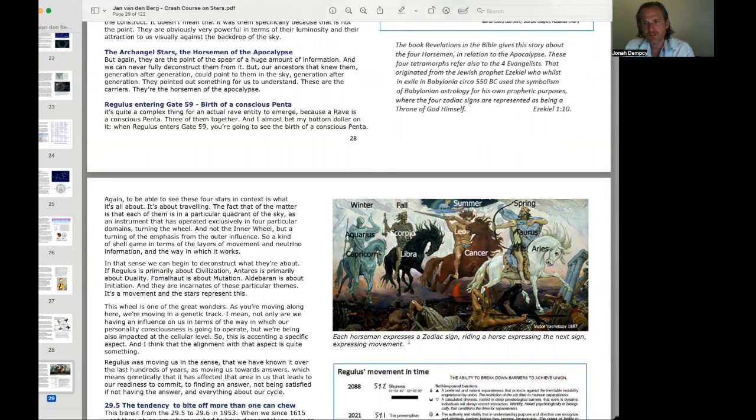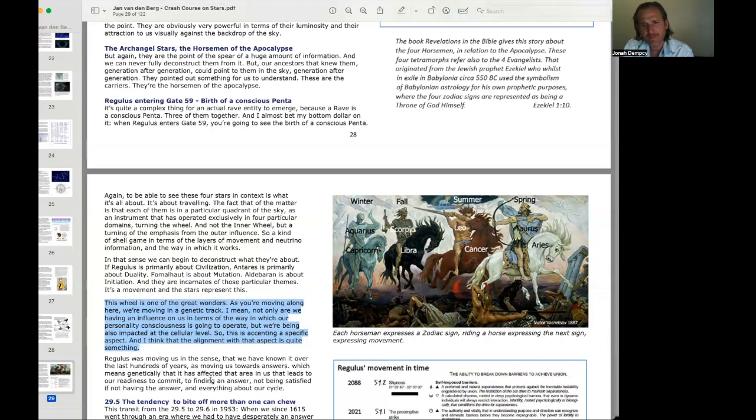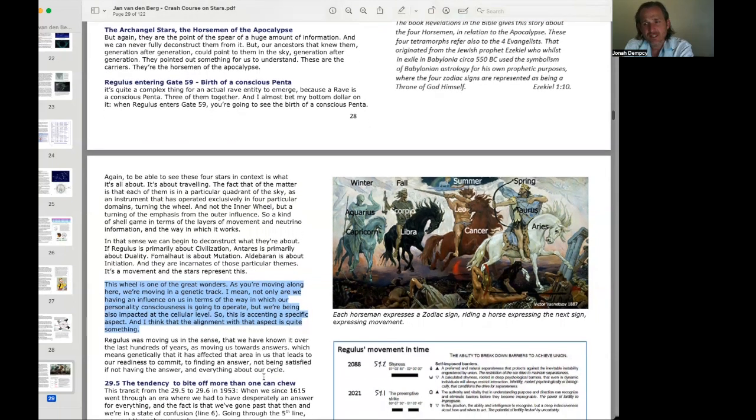This wheel is one of the great wonders. As you're moving along here, we're moving in a genetic track. Not only are we having an influence on us in terms of the way in which our personality consciousness is going to operate, we're also being impacted at the cellular level. So this is accenting a specific aspect. Regulus was moving us towards answers. Which means, genetically, that it has affected that area in us that leads to our readiness to commit, to finding an answer, not being satisfied if not having the answer.